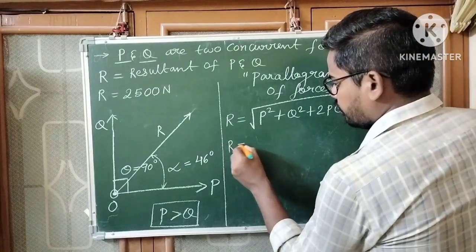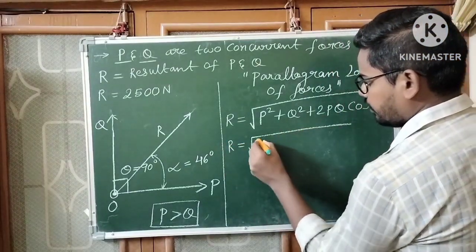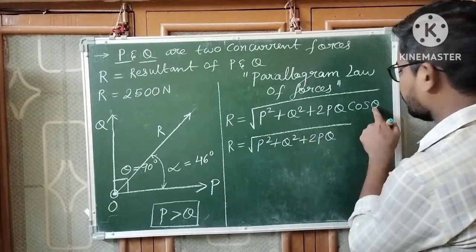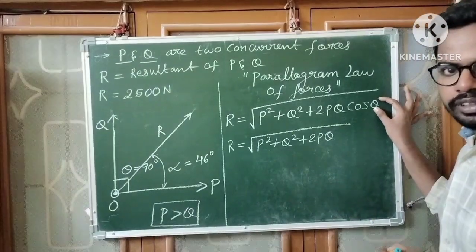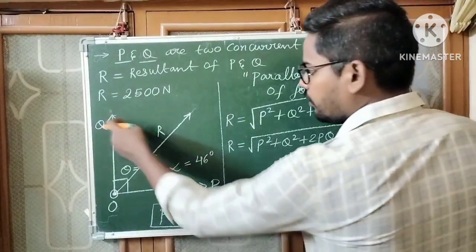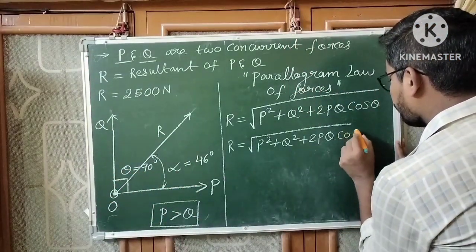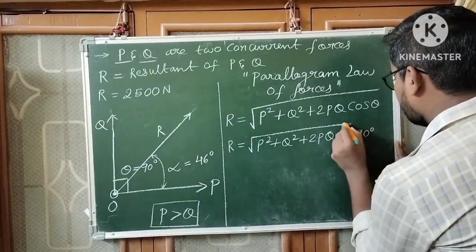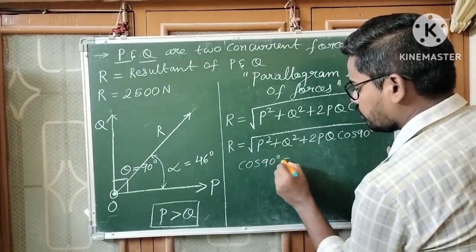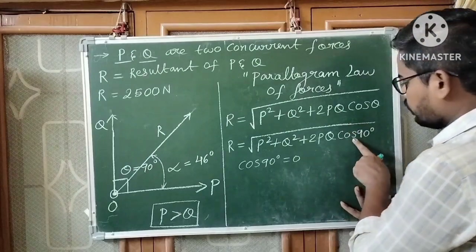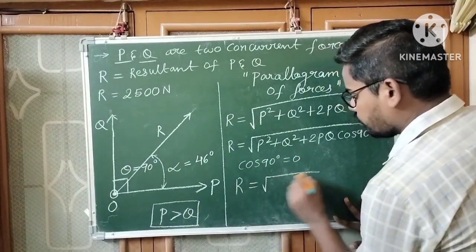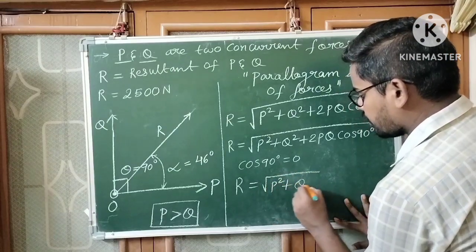So R equals the square root of P squared plus Q squared plus 2PQ cos theta. Theta is the angle between the two concurrent forces, which is 90 degrees. We know that cos 90 degrees equals zero, so the 2PQ cos 90 term becomes zero. Therefore, the resultant equals the square root of P squared plus Q squared.